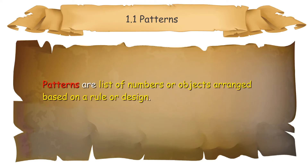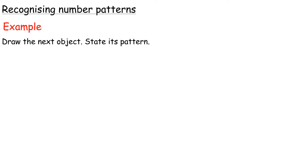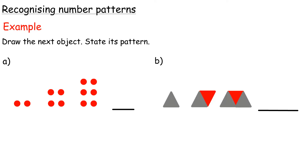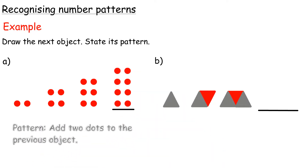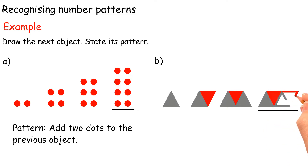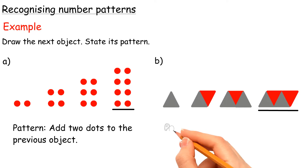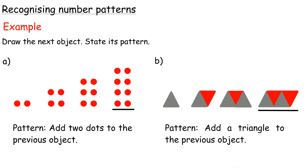First, we go to 1.1 Patterns. Patterns are a list of numbers or objects arranged based on a rule or design. Recognizing number patterns: Draw the next object and state its pattern. A: The pattern is add two dots to the previous object. B: The pattern is add a triangle to the previous object.